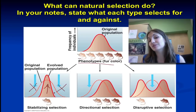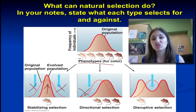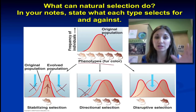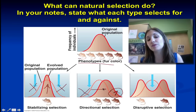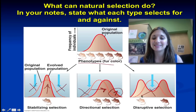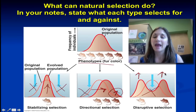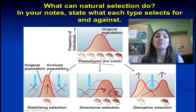In directional selection, one extreme is unfavorable so its frequency decreases, but the other extreme is favorable so the population will move in that direction. In disruptive selection, the average trait is selected against while the extremes are selected for. Which scenario plays out completely depends upon the environment — what the environment has to offer and how the organism is making use of the resources available.